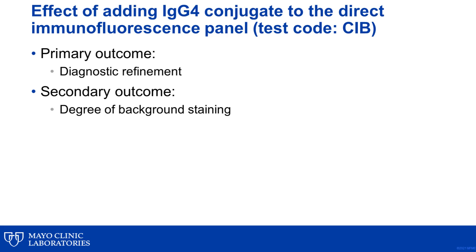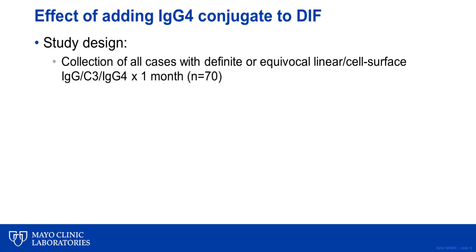Specifically, we aimed to assess how often the addition of the IgG4 conjugate helped to refine diagnosis. As a secondary outcome, we documented the degree of background staining with IgG, C3, and IgG4 to see whether decreased background staining with IgG conjugate may contribute to improved sensitivity and specificity of findings. To assess these outcomes, we collected all cases over a one-month period in which there was definite or equivocal linear or cell-surface deposition with IgG, C3, and/or IgG4.